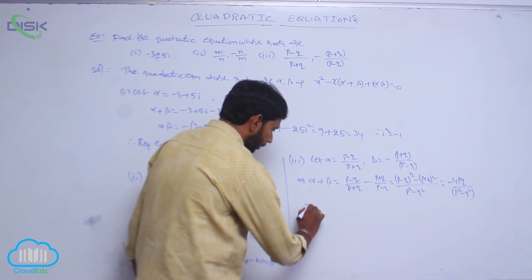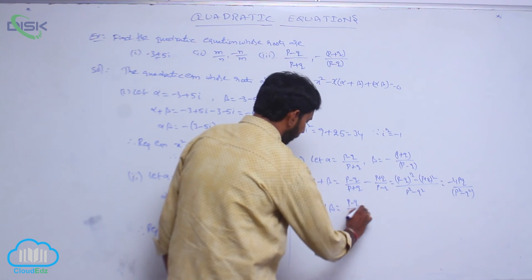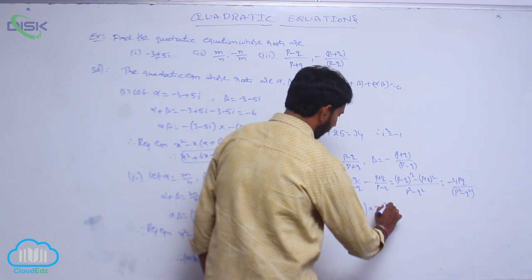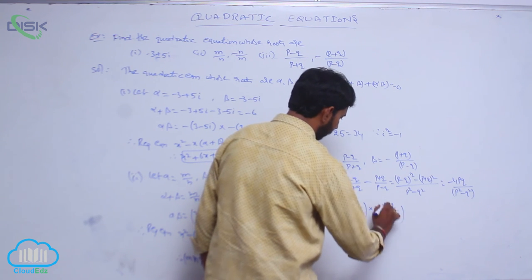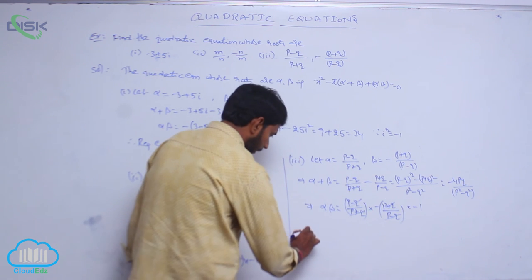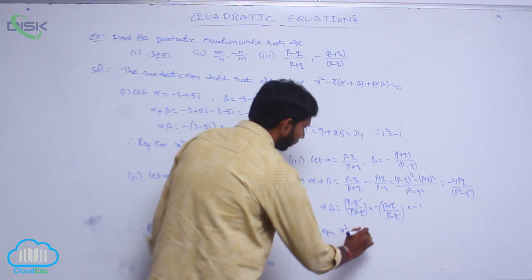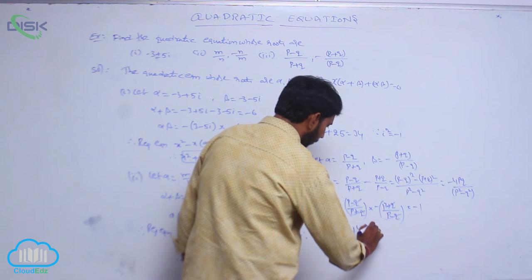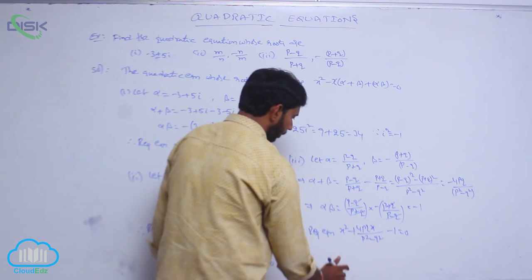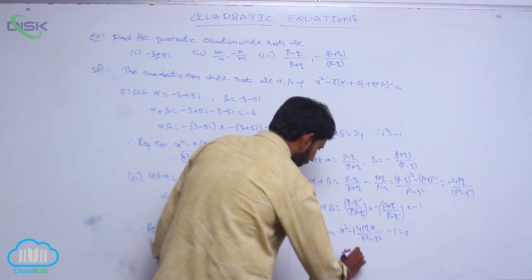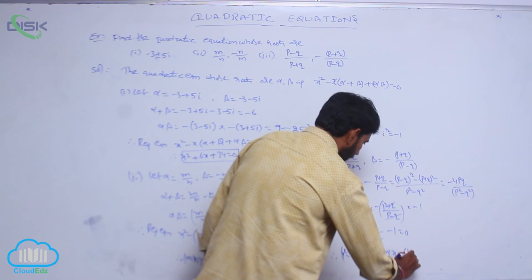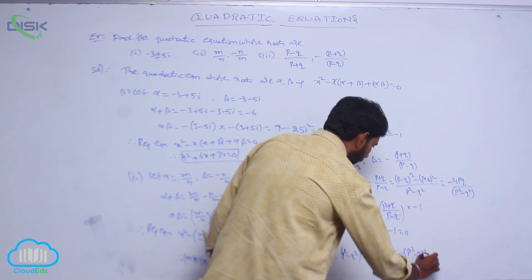Product of roots: alpha·beta = [(p minus q)/(p plus q)] · [minus (p plus q)/(p minus q)] = minus 1. Therefore, the required equation is x squared plus 4pq·x/(p squared minus q squared) minus 1 = 0, that is (p squared minus q squared)·x squared plus 4pq·x minus (p squared minus q squared) = 0.